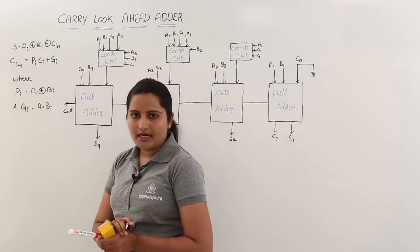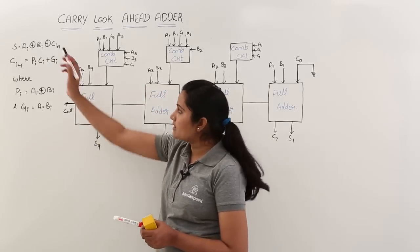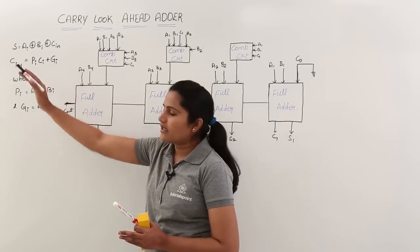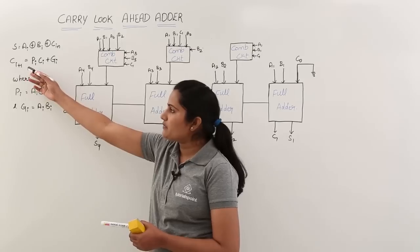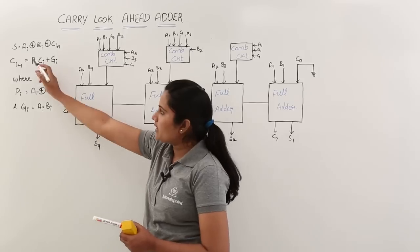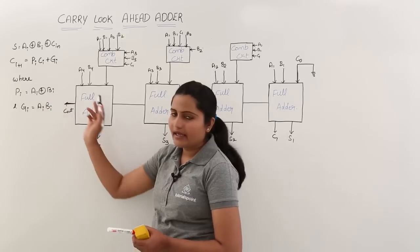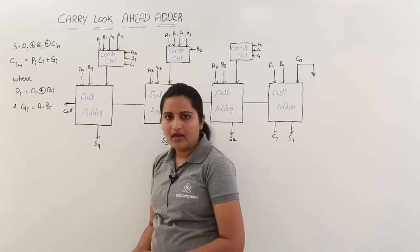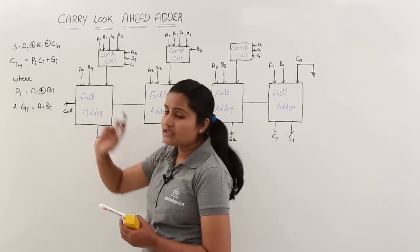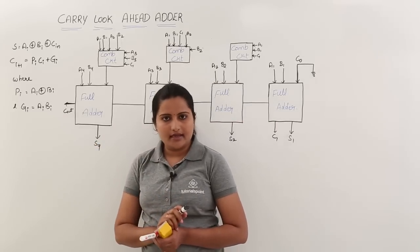Whatever sum is there for any full adder, that sum is equal to A XOR B XOR C, where C is the input carry. Whatever carry we need to get is C(i+1), which is equivalent to P_i * C_i + G_i. Here P_i is nothing but carry propagate, that means A_i XOR B_i — we already discussed this in the last class. G_i is nothing but carry generate, which is equivalent to A_i AND B_i.